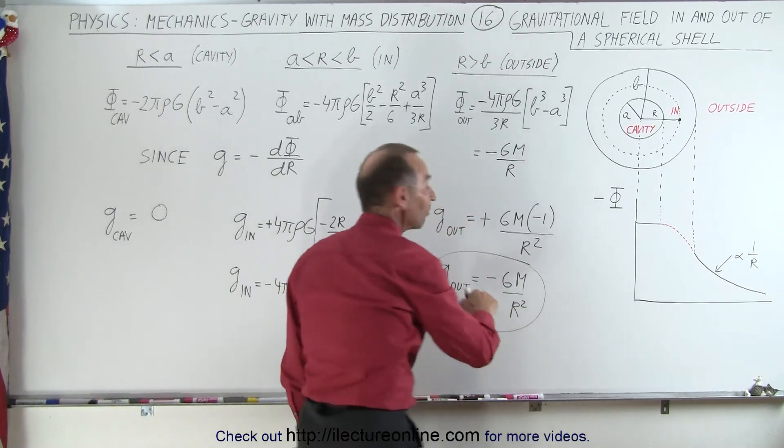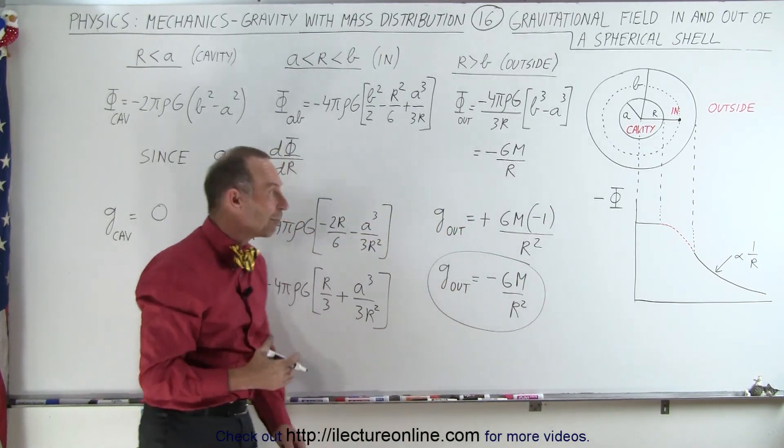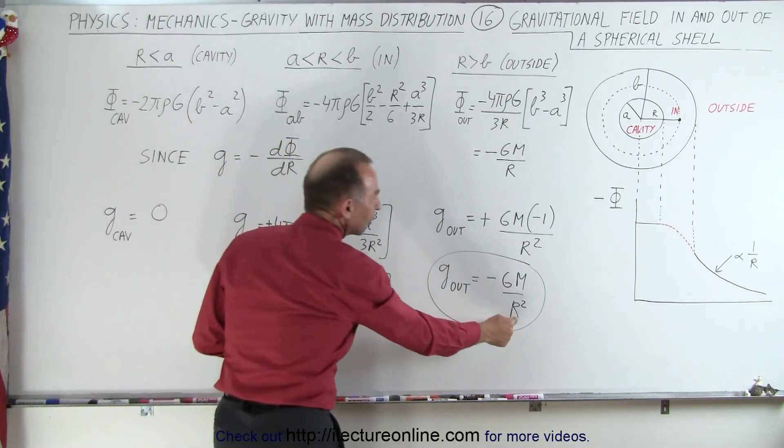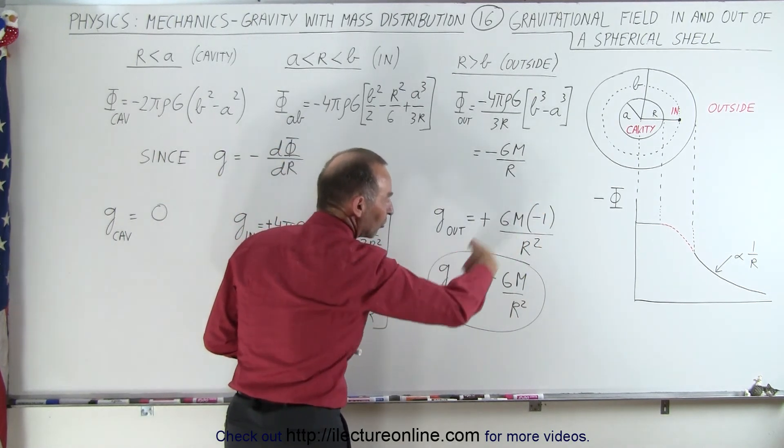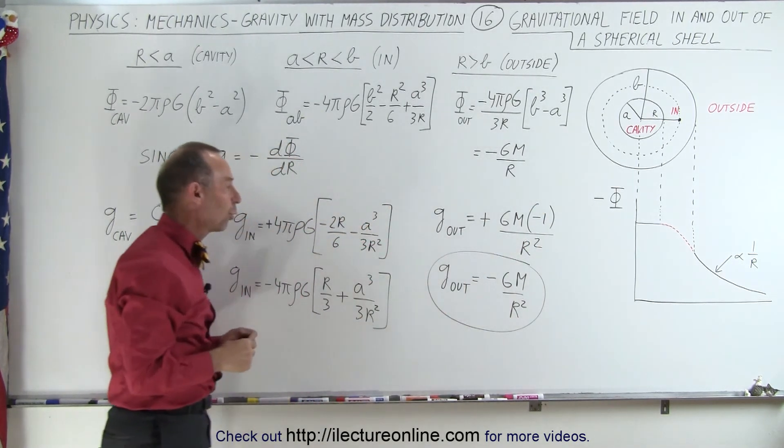In other words, that's what we expect to find for any object, if you're outside of it, it'll be gm over the distance squared, a negative because the gravitational acceleration will be towards the object.